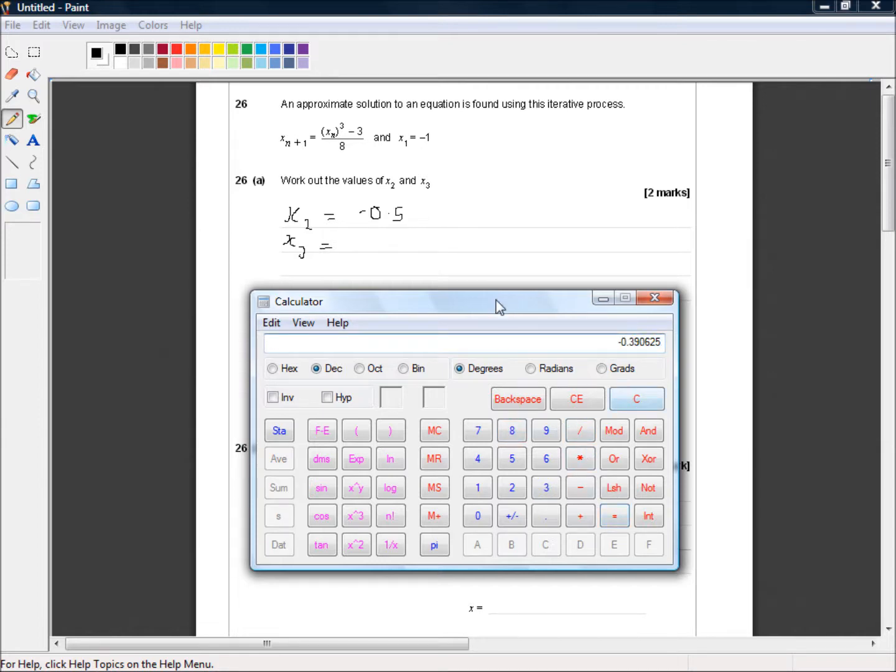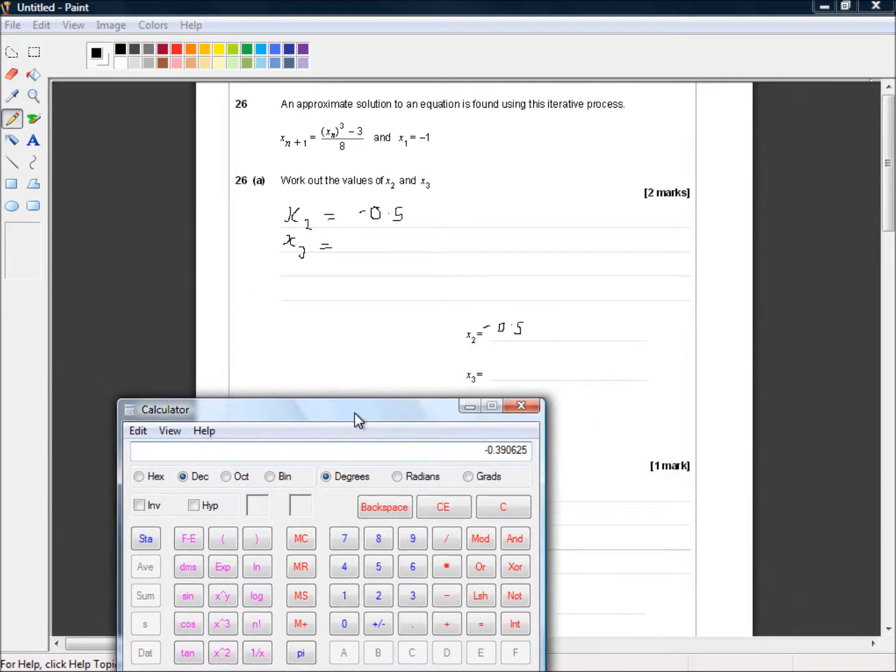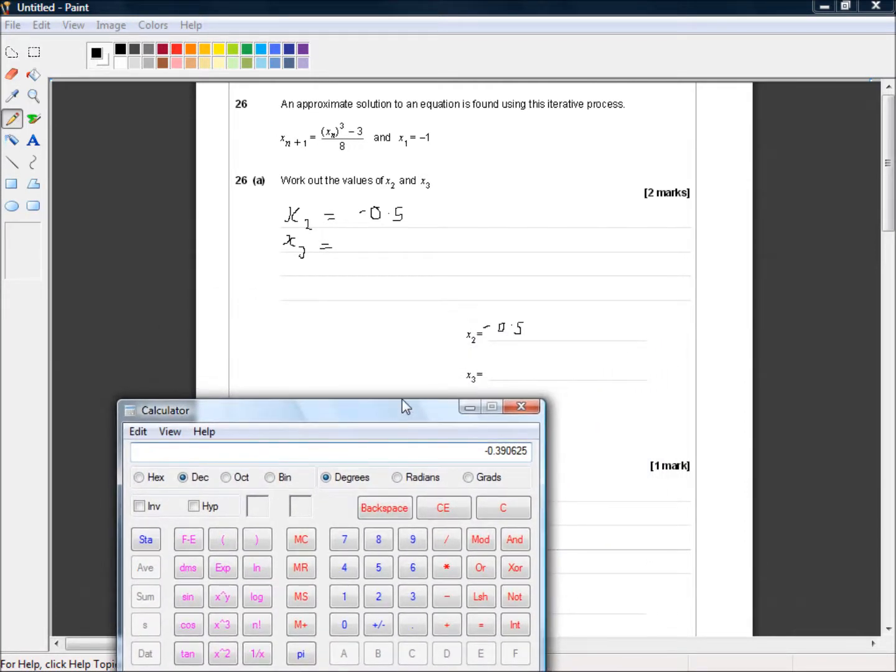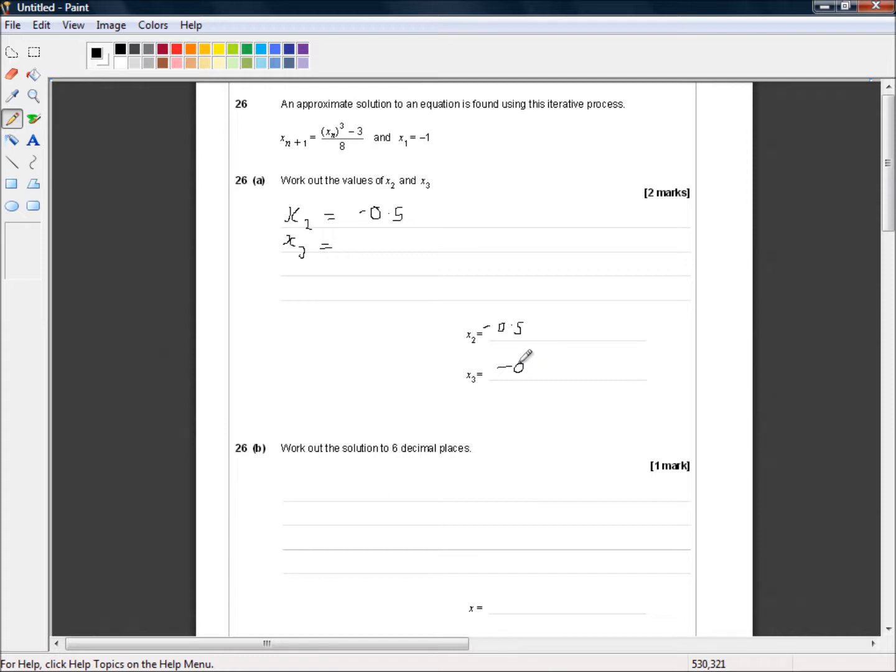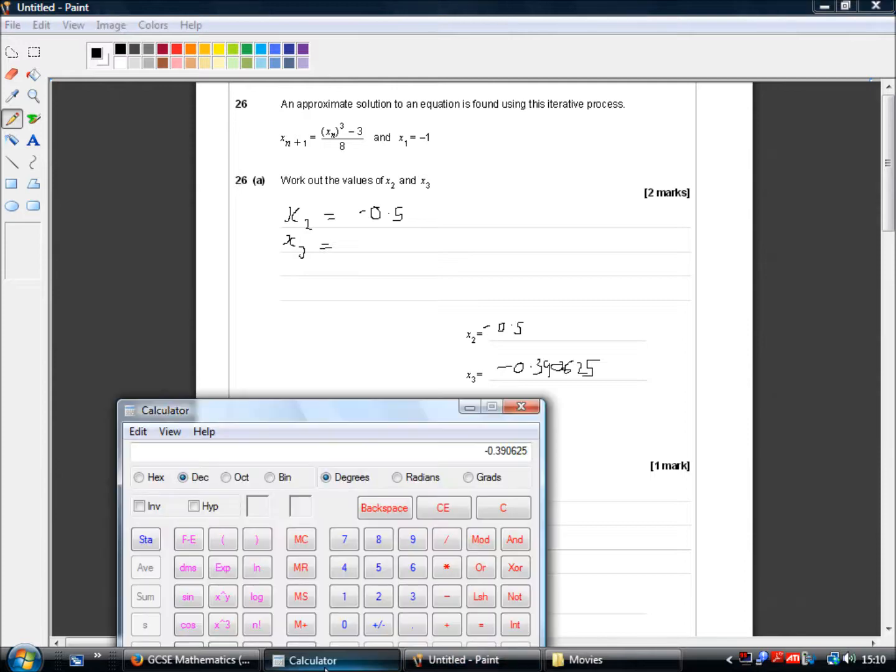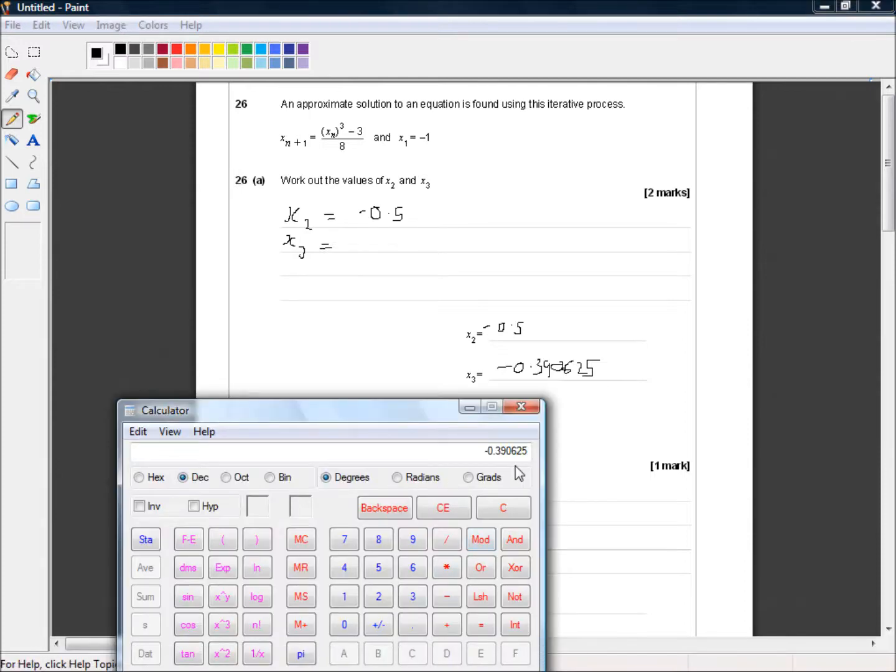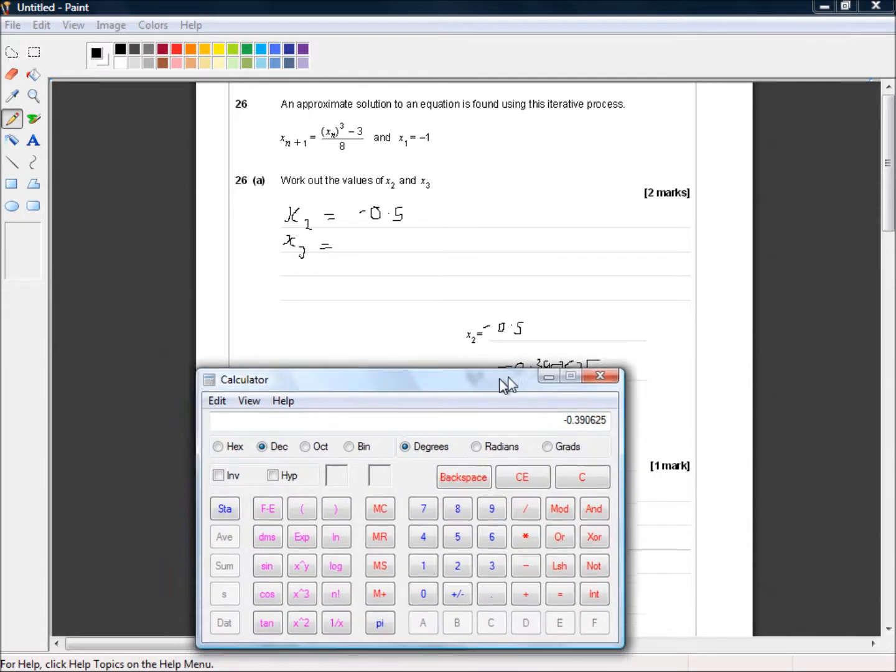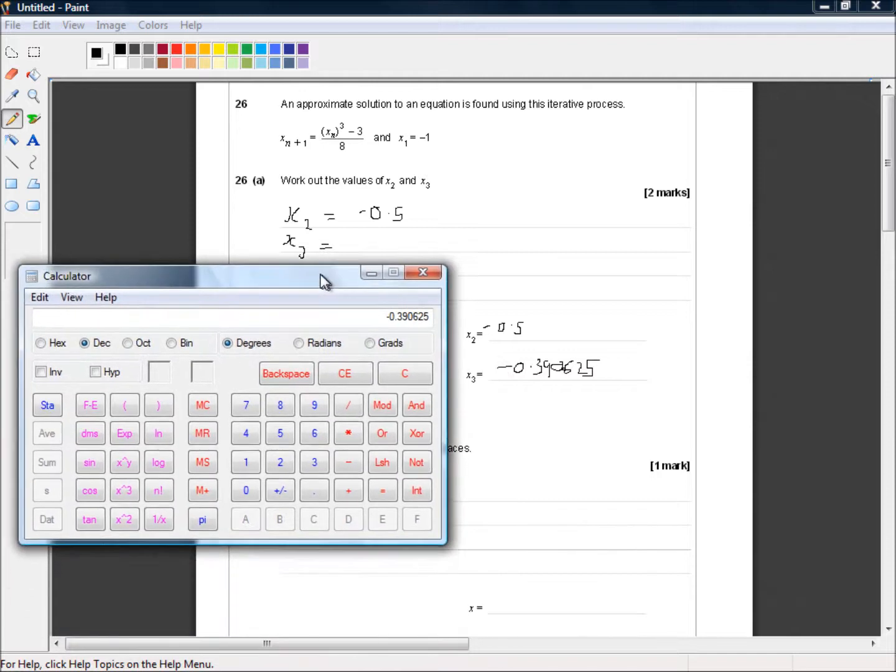And that gives me negative 0.390625. So that's negative 0.390625. And I just want to make sure that is the correct answer. So that's part A done, which is two easy marks.